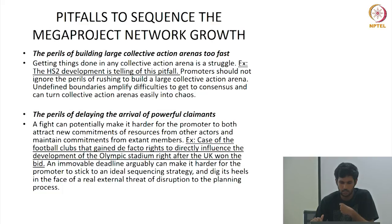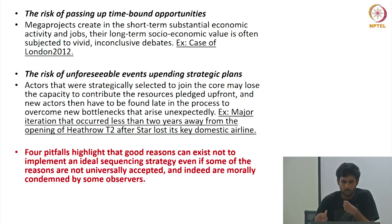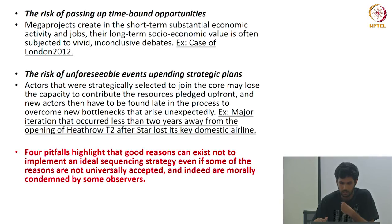The pitfalls in sequencing mega project network growth include: the perils of building large collective action arenas too fast — the HS2 development is an example of this pitfall; the perils of delaying the arrival of powerful claimants — the case of a football club that gained de facto rights to directly influence the development of the Olympic stadium right after the UK won the bid; the risk of passing up time-bound opportunities, as seen in London 2012; and the case of unforeseeable events upending strategic plans — the major disruption that occurred less than two years from the opening of Heathrow T2 after Star Alliance lost its key domestic airline.